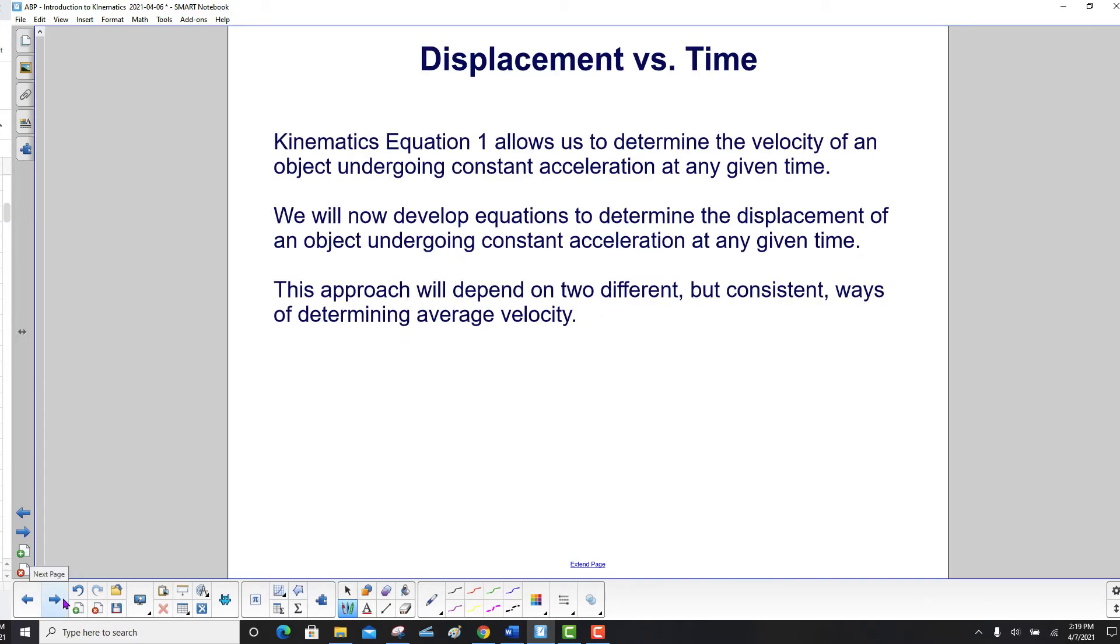Displacement versus time. Kinematics equation 1 allows us to determine the velocity of an object undergoing constant acceleration at any given time. We will now develop equations to determine the displacement of an object undergoing constant acceleration at any given time.